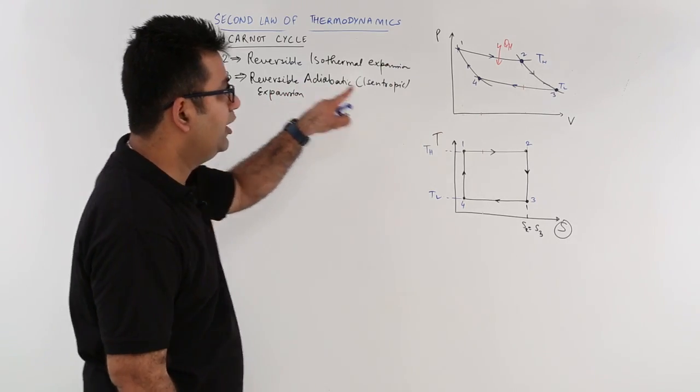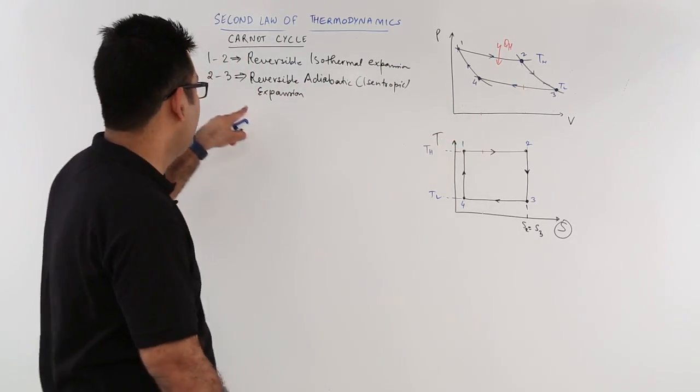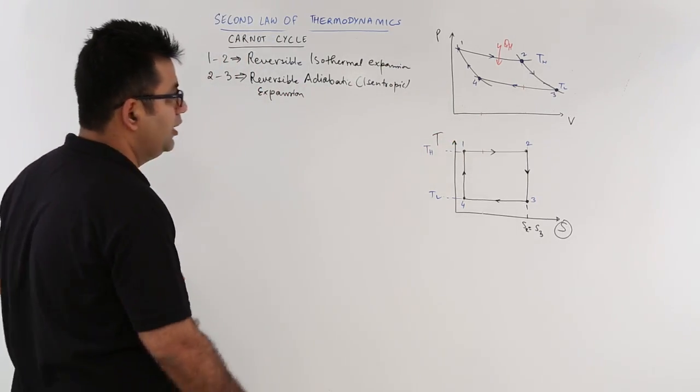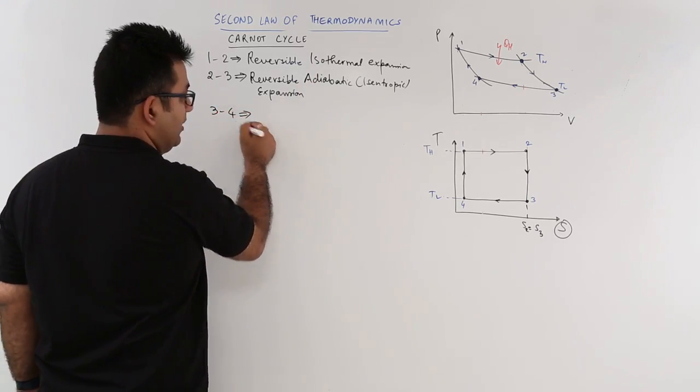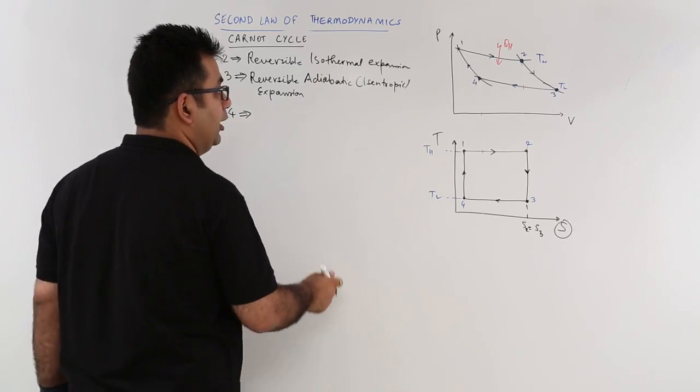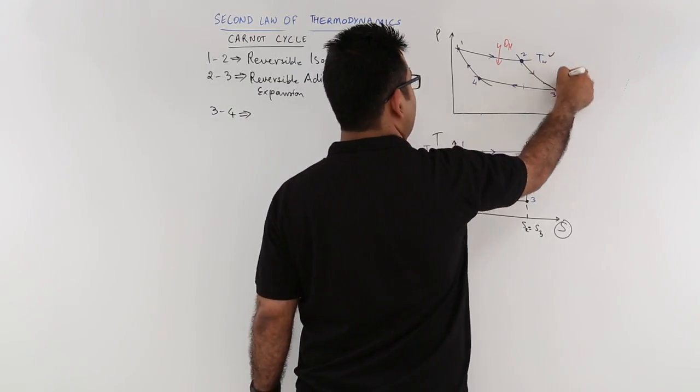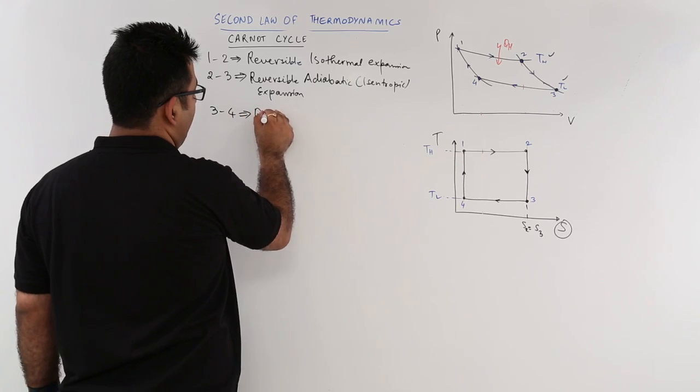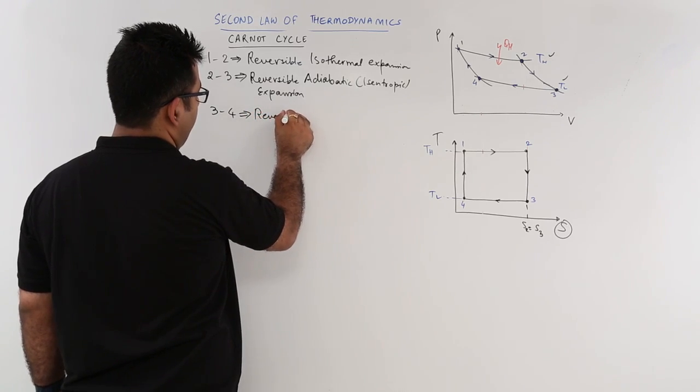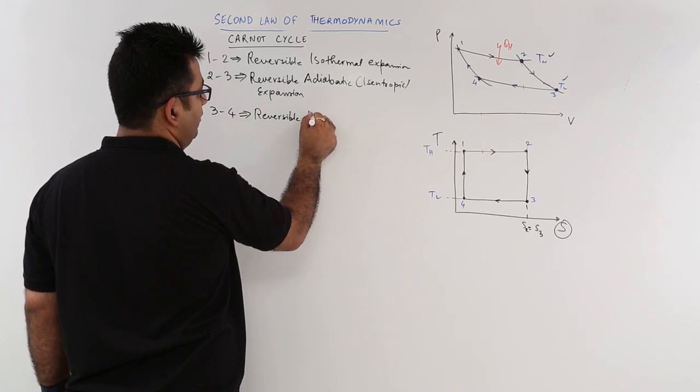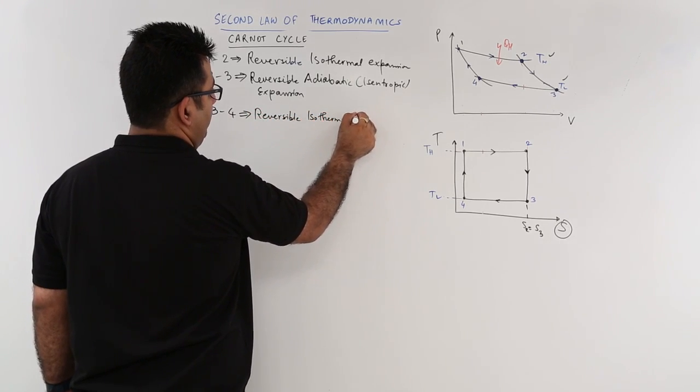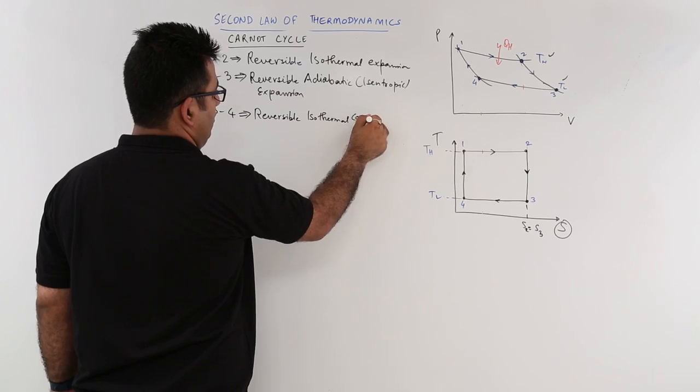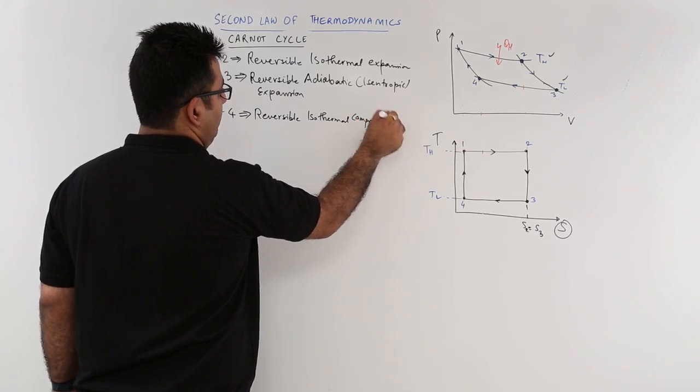In this, there is no heat interaction because it is an adiabatic process. Now we come to 3 to 4. 3 to 4 again becomes isothermal. There are two temperature limits, Th and Tl. So this becomes reversible isothermal compression.